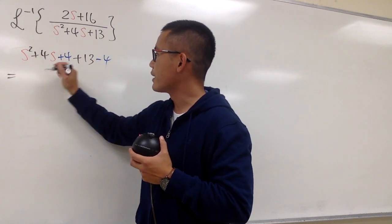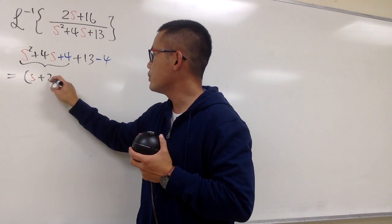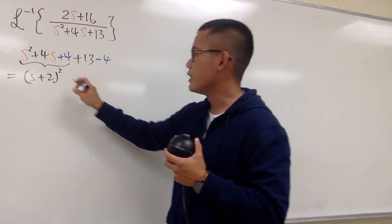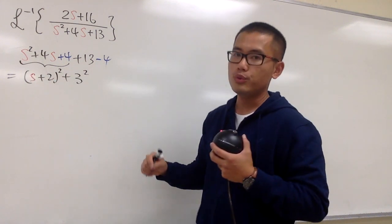And then you will see this right here, the first three terms, right? It's going to be s plus 2 squared, and then of course 13 minus 4, which is 9, you can write the 9 as 3 squared, and this is what we have, and this will be the new denominator.